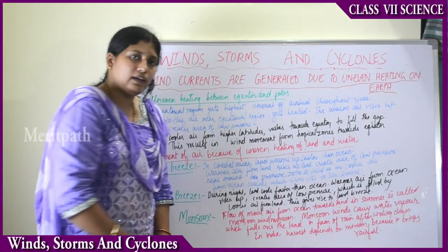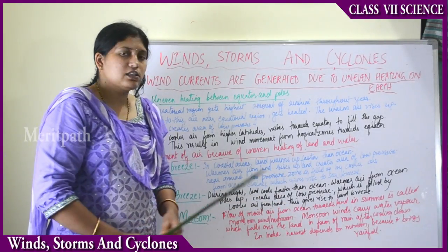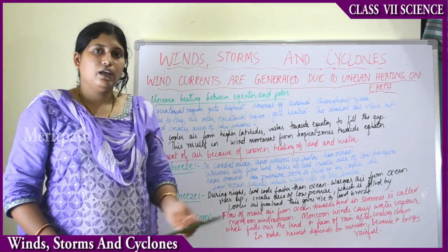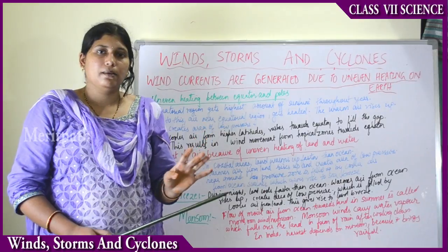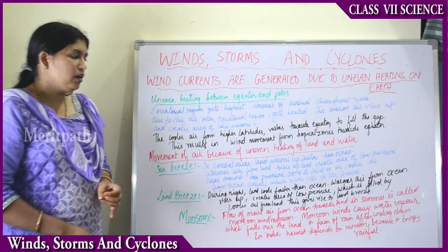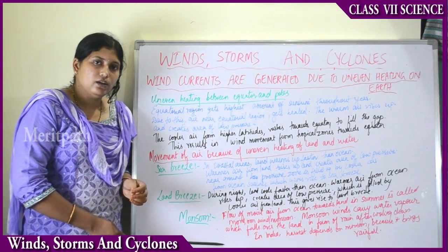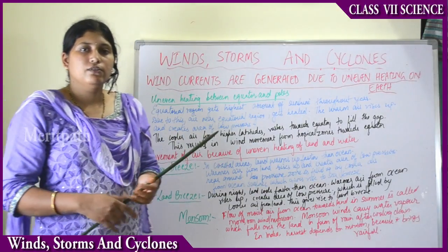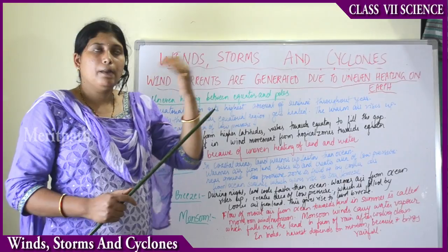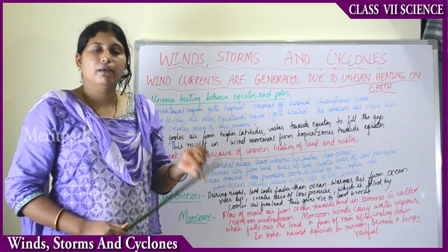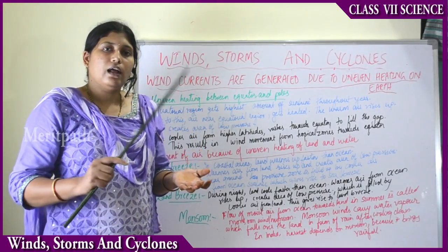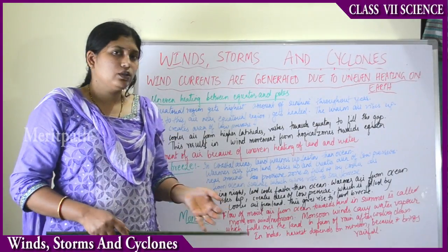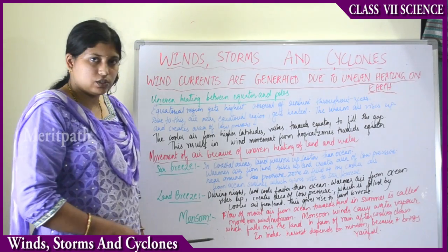In India, harvest depends mostly on the monsoon — that is, on rainfall. If there are no rains, all the crops will dry up, so rains are very necessary for agriculture in India. The warm air rises in the form of water vapor through evaporation, forms clouds, cools down, and comes back to earth as rain — this is the monsoon.